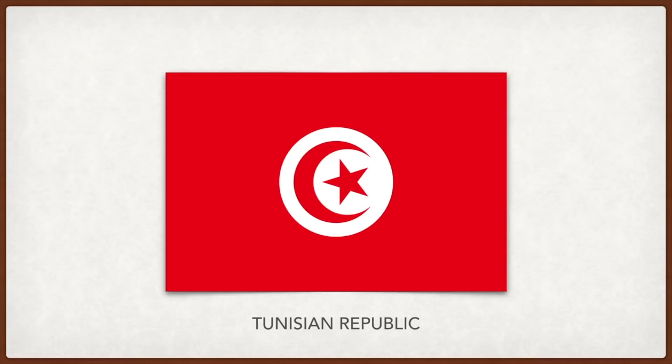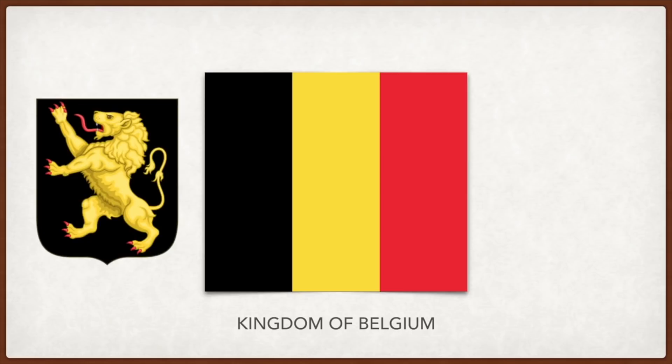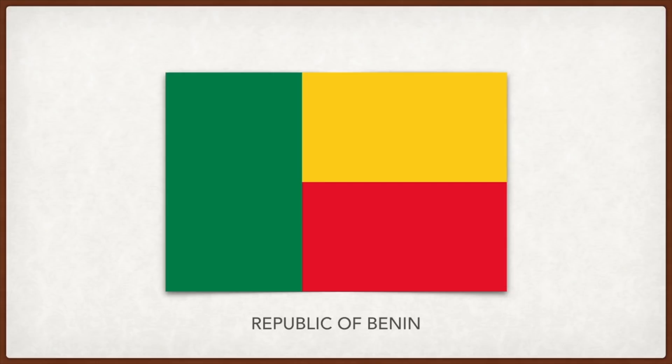Belgium: the colors were taken from the coat of arms of the Duchy of Brabant and are representative of the country's independence. Benin: the yellow and green represent the savannahs and palm groves of the country, while the red symbolizes the bloodshed in fighting for the country.